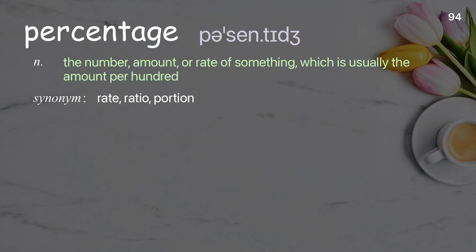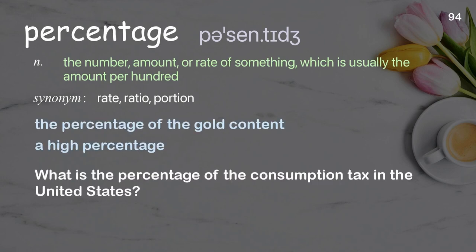Percentage: the number, amount, or rate of something, which is usually the amount per hundred. Examples: the percentage of the gold content, a high percentage. What is the percentage of the consumption tax in the United States?